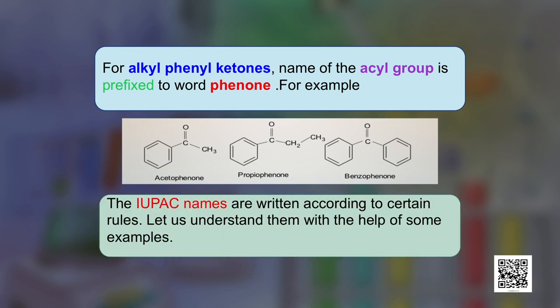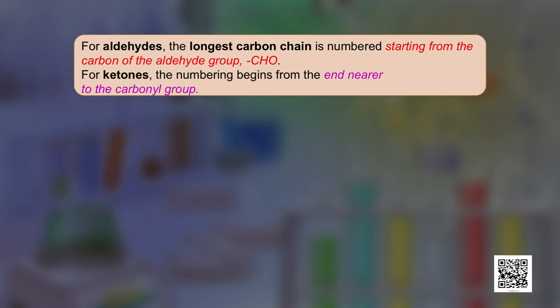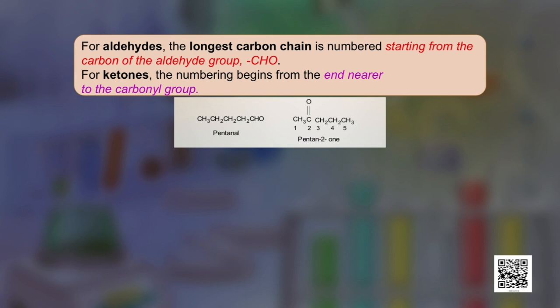The IUPAC names are written according to certain rules. For aldehydes, the name is obtained by replacing the ending '-e' in the name of the alkane with '-al' to give the word alkanal, and for ketones the final '-e' is replaced by '-one' to give the word alkanone. For aldehydes, the longest carbon chain is numbered starting from the carbon of the aldehyde group (CHO), and for ketones the numbering begins with the end nearer the carbonyl group.